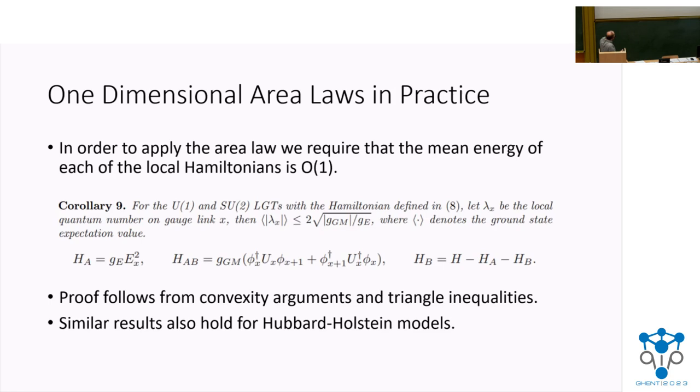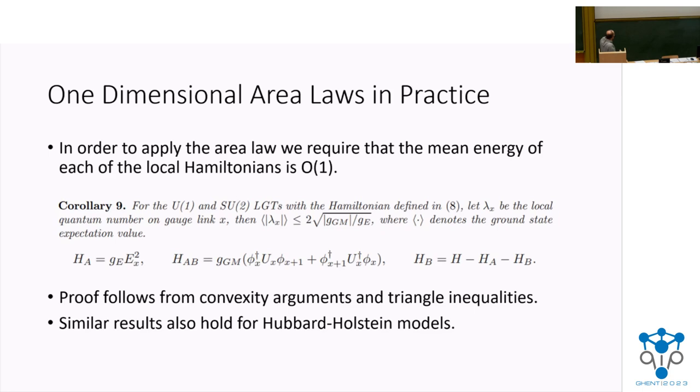So to give an idea of systems that end up having this, basically by using some standard convexity arguments, we, it's possible to show in a case-by-case basis that this mean quantum number of order one ends up applying for a lot of systems. So we did this for the Schwinger model, found out it works, and the same thing we show for Hubbard-Holstein. But to conclude, what we've been able to do is something that I think is cool.